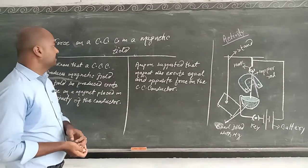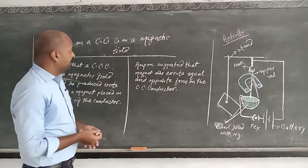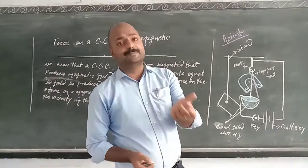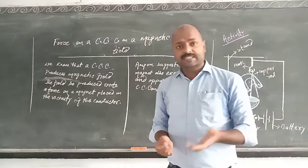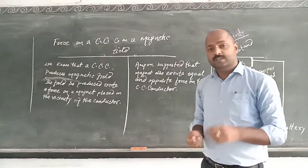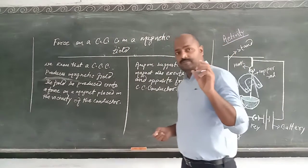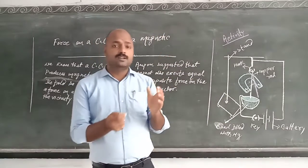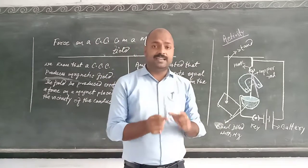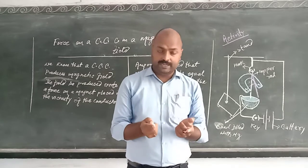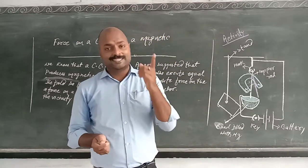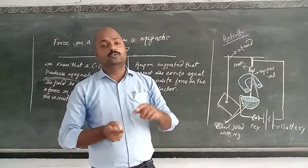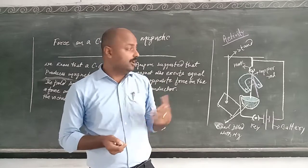Today we are going to discuss about what happens whenever we keep any current carrying conductor in a magnetic field — it experiences force. In the previous lecture we discussed how when we pass electric current through a conductor it produces a magnetic field around it, as seen through a straight long current conductor, through a circular loop, through a solenoid wire and an electromagnet.